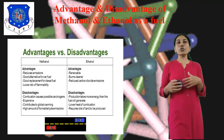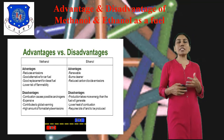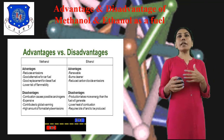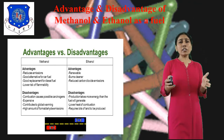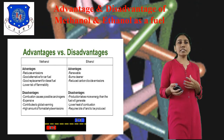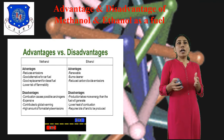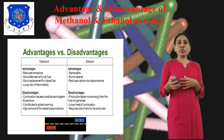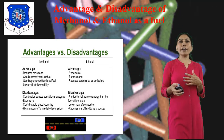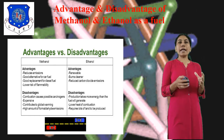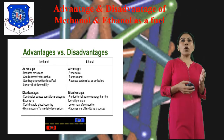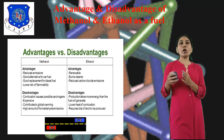Ethanol is more expensive, requires 10 to 15 percent blending, and engine modification is required. Also the combustion of this fuel has disadvantages. These are the various advantages and disadvantages of Methanol and Ethanol fuel.